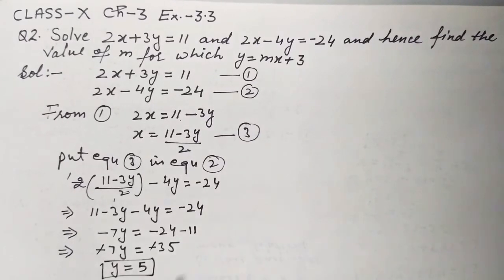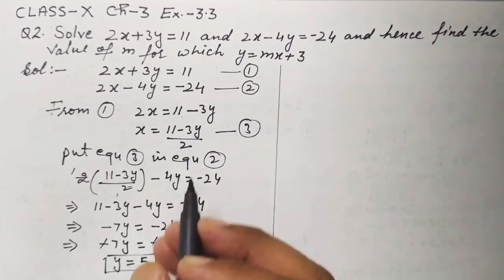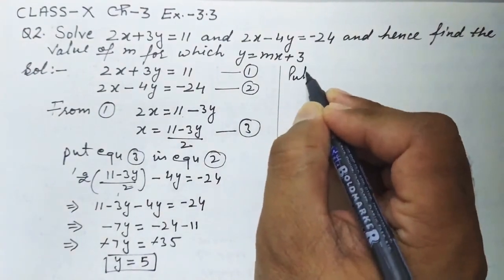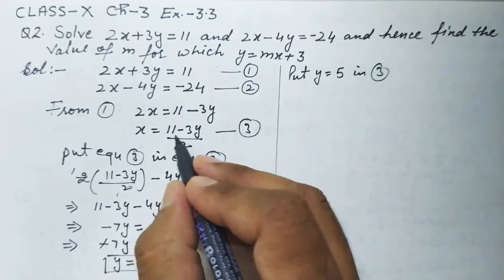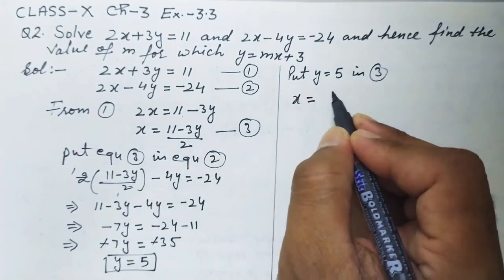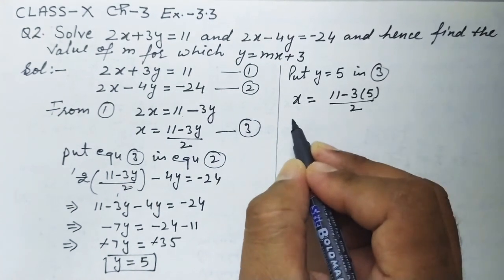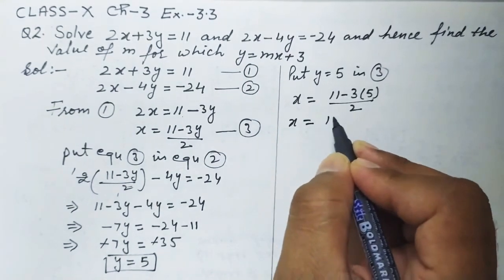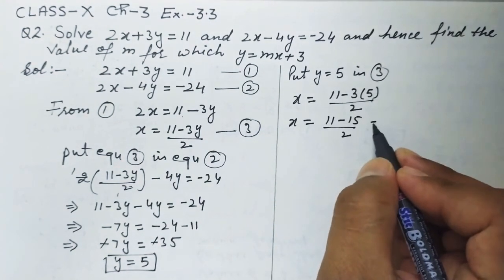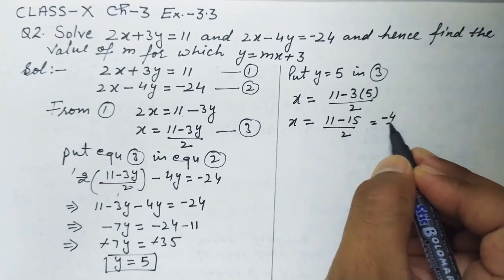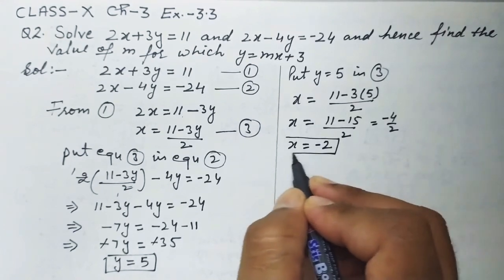So we have minus 7y is equal to minus 35. The negatives cancel, giving y is equal to 35 over 7, that is 5. So the value of y is 5. Now we fill y equals 5 into equation 3: x is equal to 11 minus 3 times 5 over 2, which is 11 minus 15 over 2, giving minus 4 over 2. So x is minus 2.